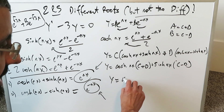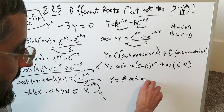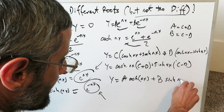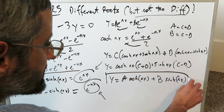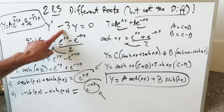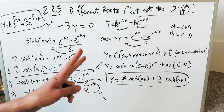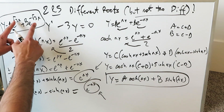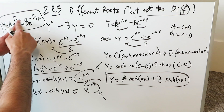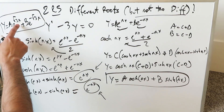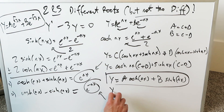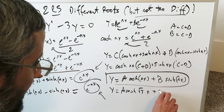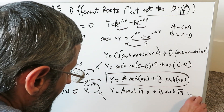y equals a hyperbolic cosine nx plus b hyperbolic sine nx. This represents the general form you can use for situations where you have two different real roots that are numerically the same but differ only by positive and negative sign. That is exactly what you see — and this shows how you can transform the exponential answer into the hyperbolic form.